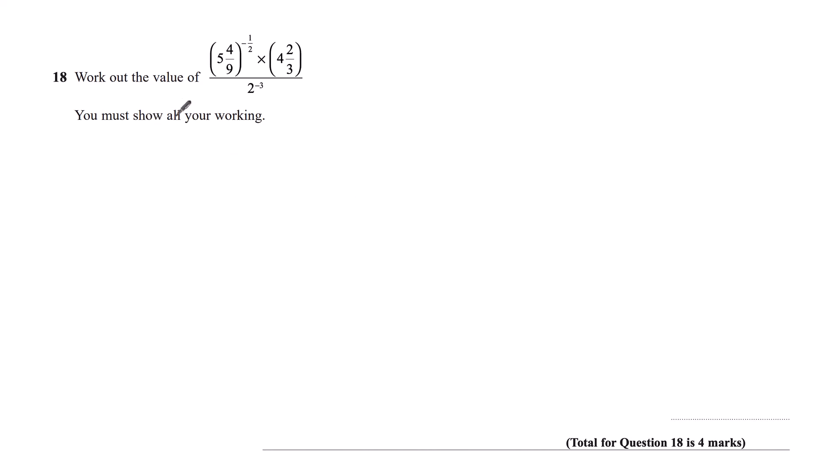Question 18. Work out the value of 5 and 4 ninths to the power minus a half times 4 and 2 thirds, all divided by 2 to the power minus 3. You must show all your working.